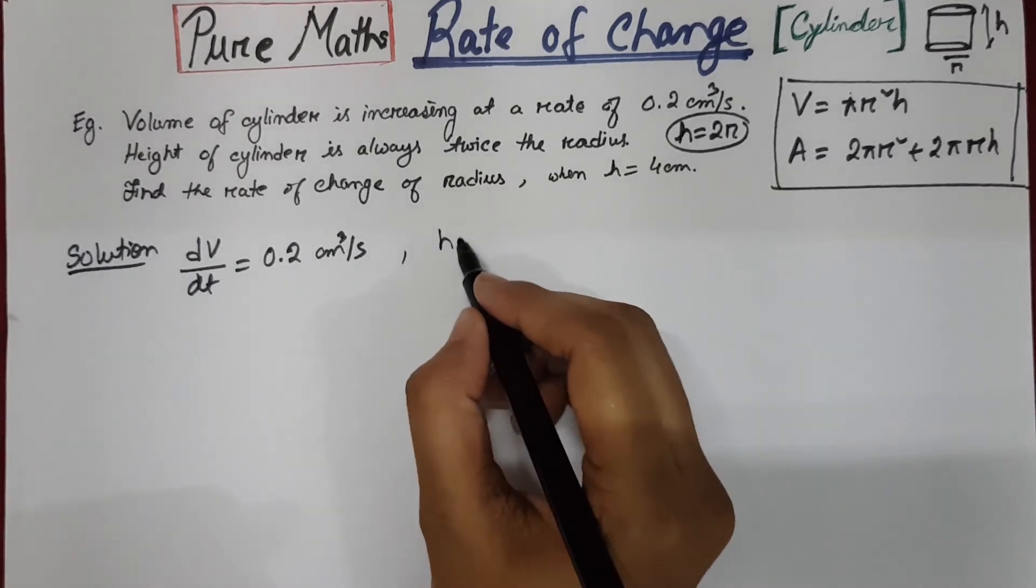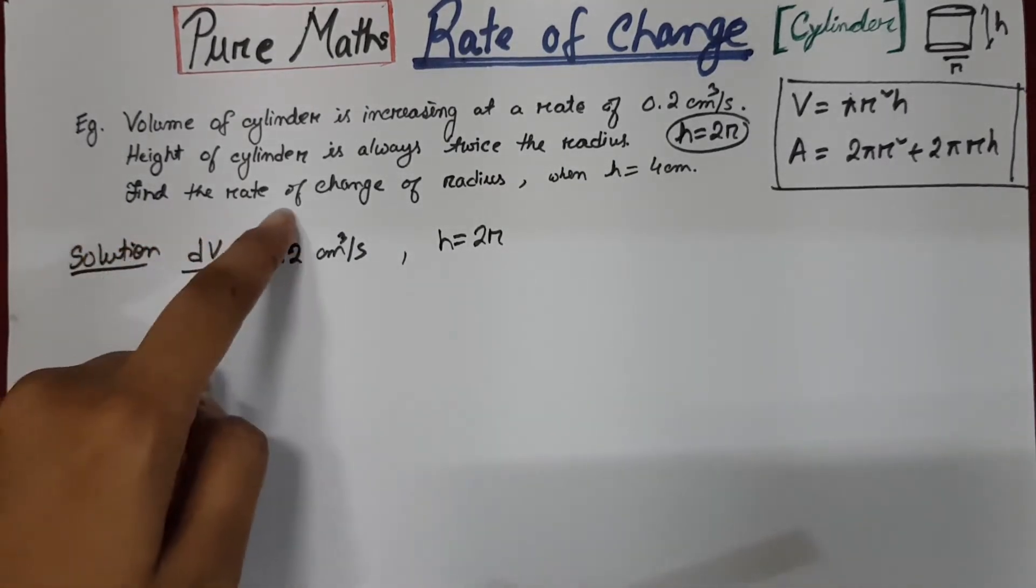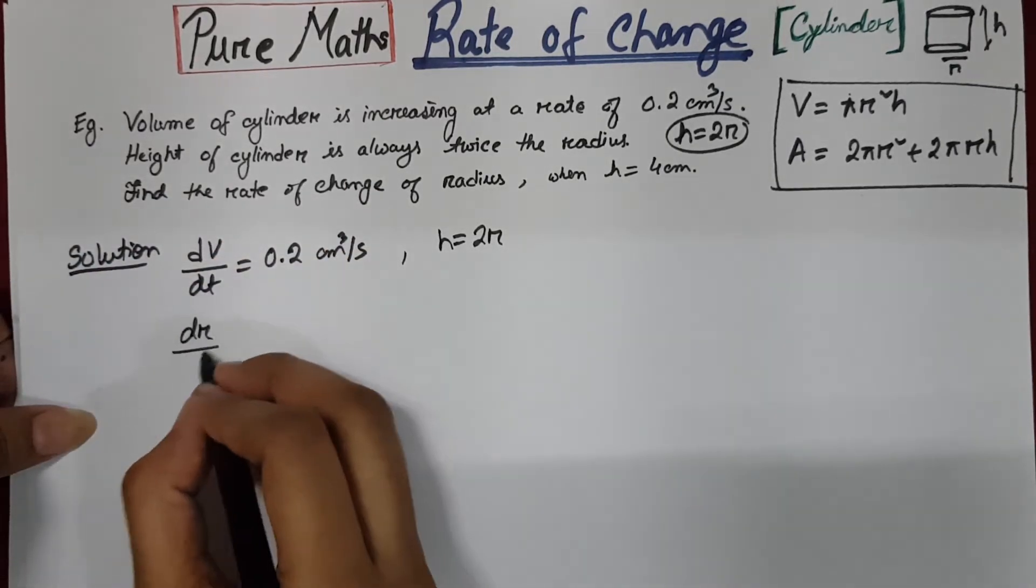So we have another given information, h equals to 2r. And we need to find the rate of change of radius of the cylinder. So dr by dt.